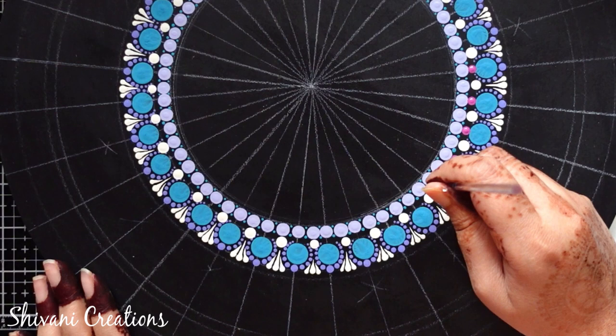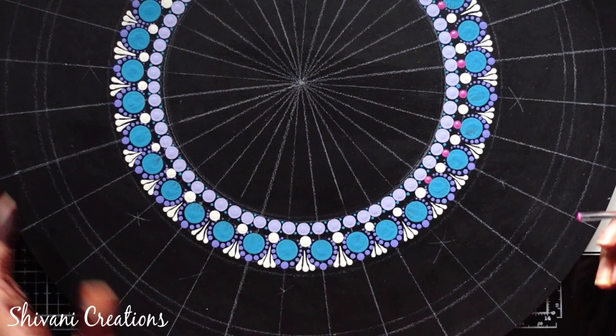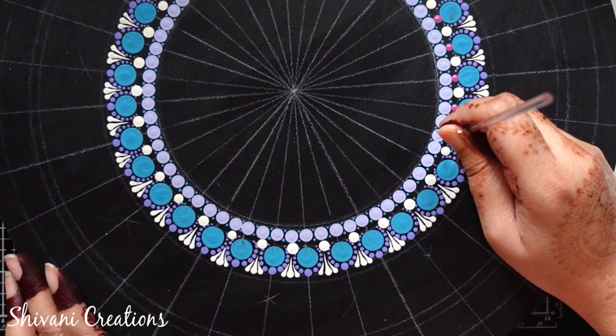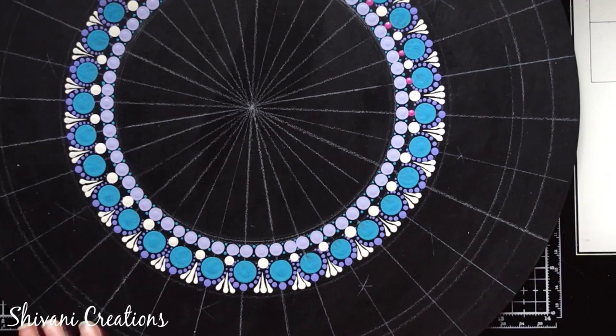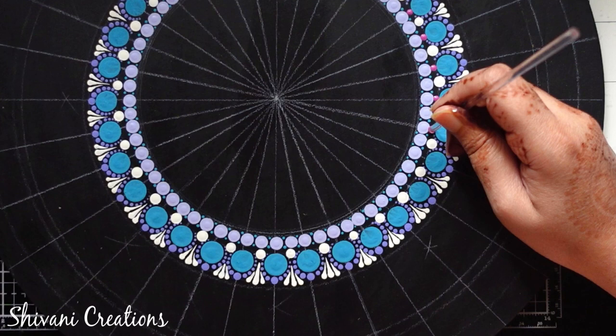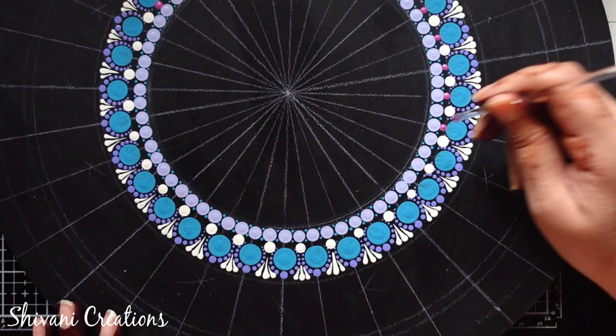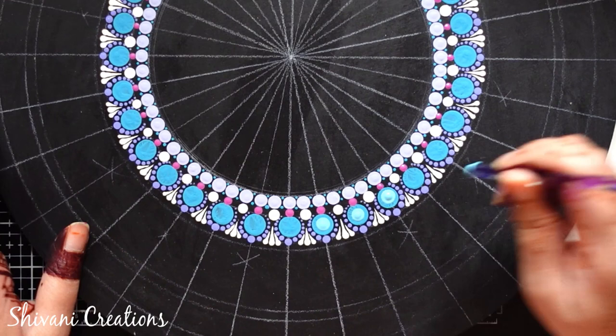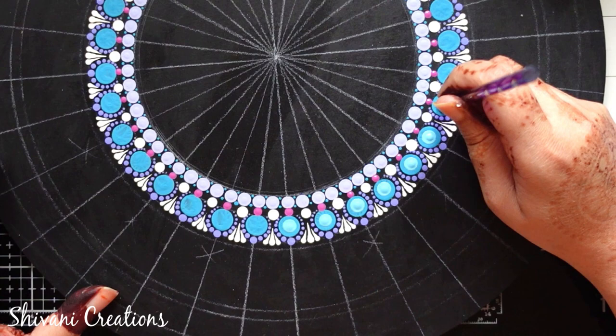So this is done. Now I am putting magenta color dots below the teal dots and see here, I am using contrast color and it is enhancing the beauty more. Now inside each teal dot I am putting smaller shape dot and I have just mixed white color in this teal color to create the lighter shade.